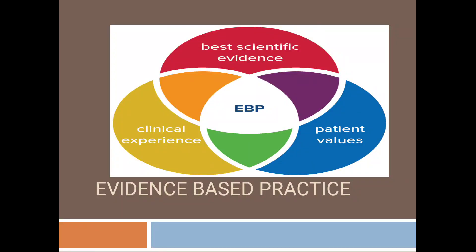Today we are going to discuss evidence-based practice. Continuing from part one, the three basic pillars are: number one, best scientific evidence and research evidence that is available; number two, clinical experience; and number three, patient values and preferences. In part one, I also discussed the five main steps of EBP. These three pillars and five steps are the core of EBP.